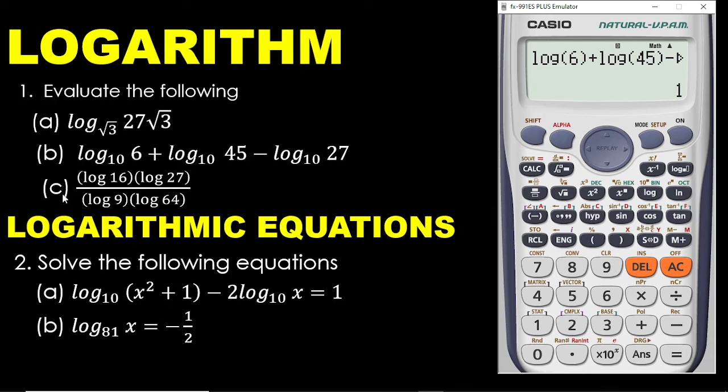Now, the third one I have to solve this. Once again, this one comes with no equal sign. By looking at it, it is a fraction. So the best thing to do is to hit the fraction key before you enter your data. Now, let me hit the fraction button. And I have log 16 times log 27. So let's enter that log 16. That is 1, 6. And then you close the bracket. Then the next one is log 27.